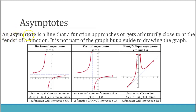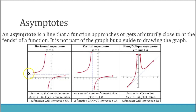An asymptote is a line that a function approaches or gets arbitrarily close to at the ends of a function. It is not actually part of the graph but serves as a guide for drawing it. A horizontal asymptote is written as y equals a number. As x approaches positive infinity, the function approaches that value, and as x approaches negative infinity, the function also approaches that same real number.